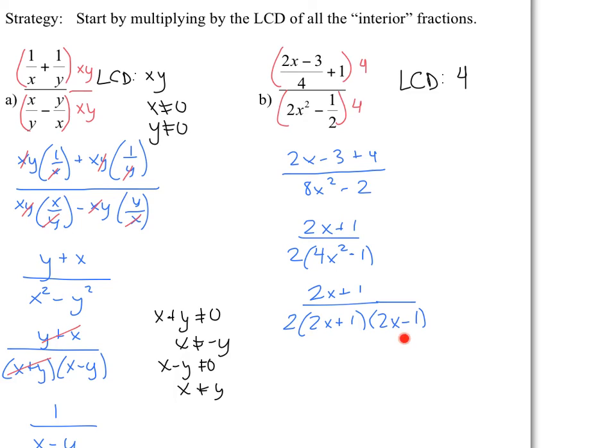you need to recognize that there are non-permissible values here. So the non-permissible values would be 2x plus 1 cannot equal 0. And if you solve for x, you would say that x cannot equal negative 1 half. And you could do the exact same thing here, and you would x cannot equal positive 1 half.